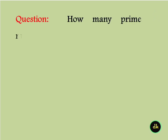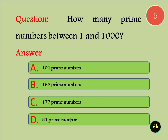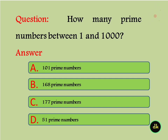How many prime numbers are between 1 and 1000? Answer is 168 prime numbers.